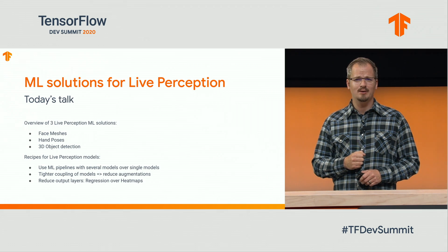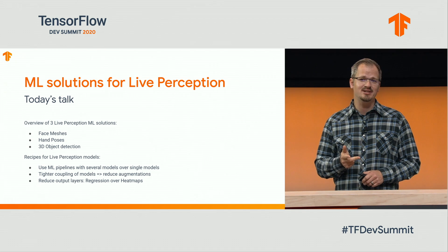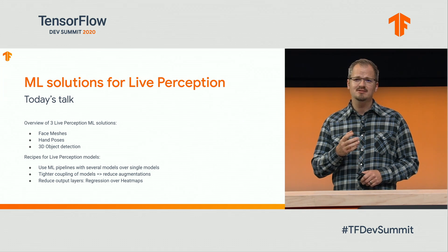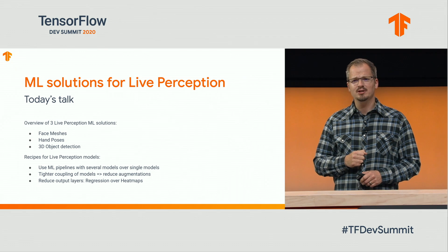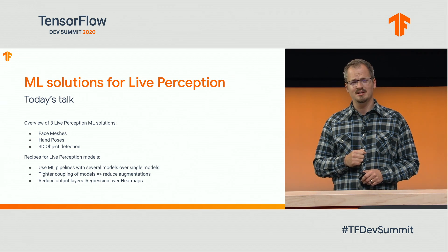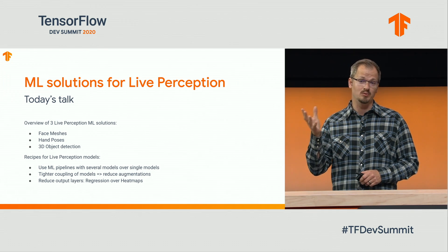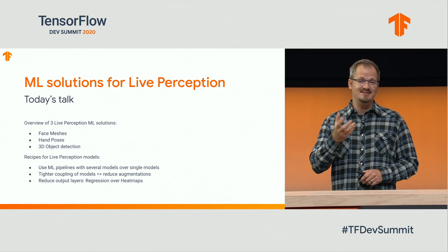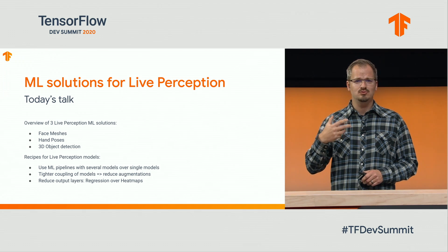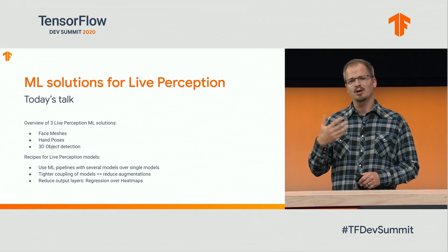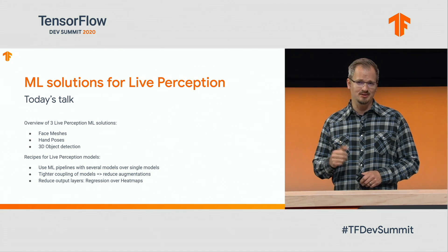In today's talk, I'm going to talk about three solutions: face meshes, hand poses, and object detection in 3D. You'll see that we have a couple of recipes for live perception that are reoccurring across those solutions. Number one, we use ML pipelines composed of several small models versus one big model. Our models are tightly coupled together, which allows us to reduce augmentations. And then we also heavily reduce the output layers, and we favor regression approaches over heatmaps.